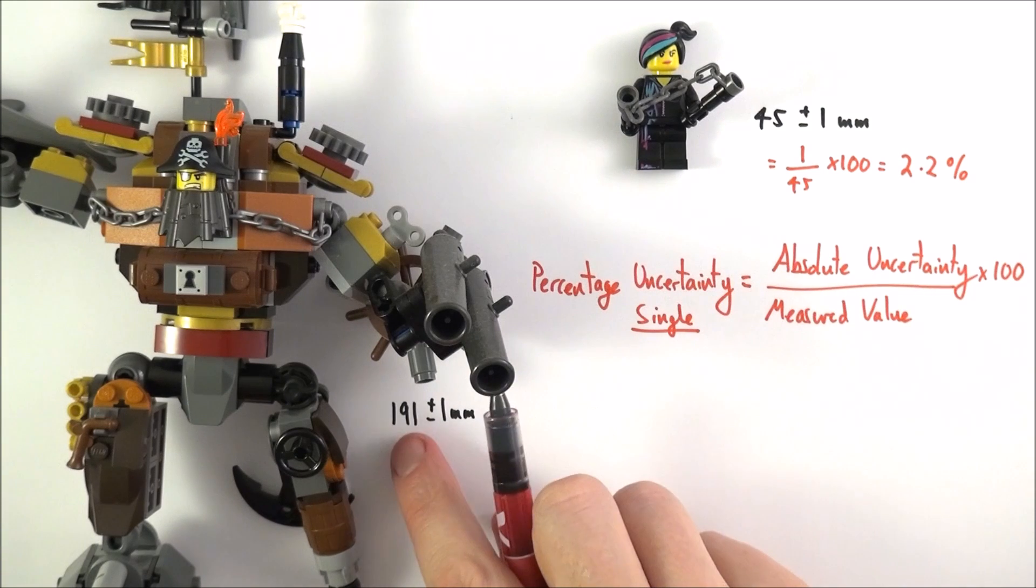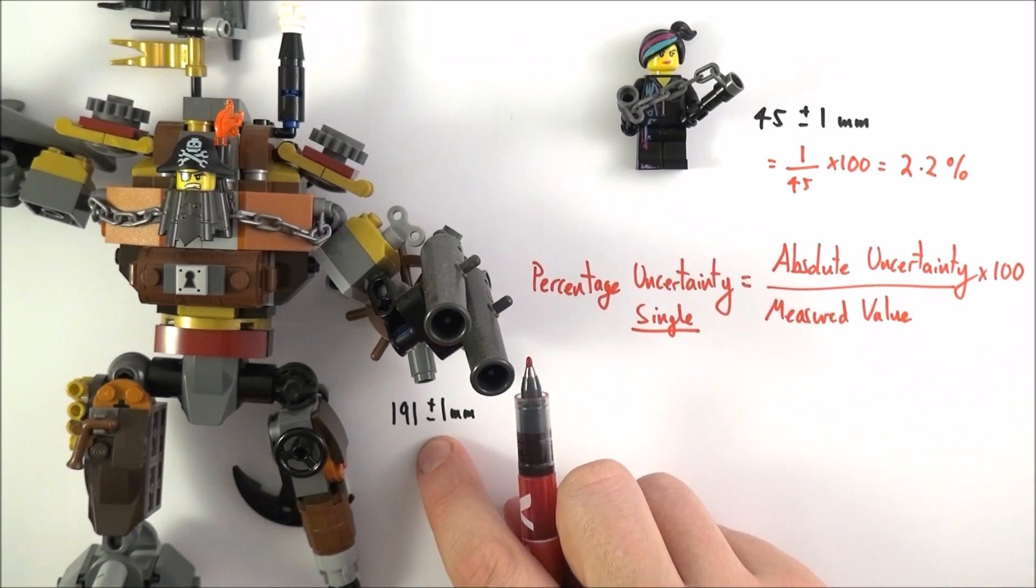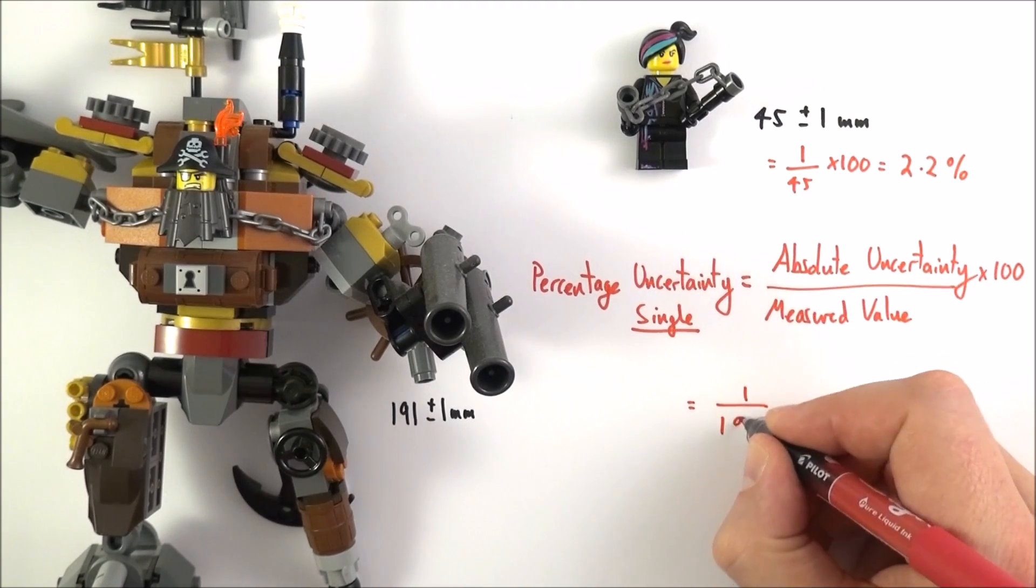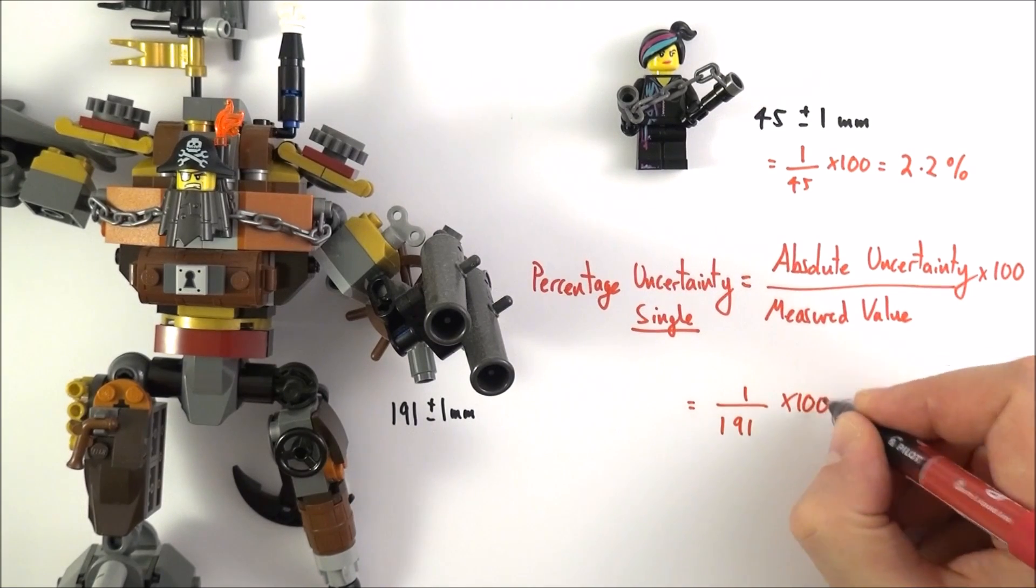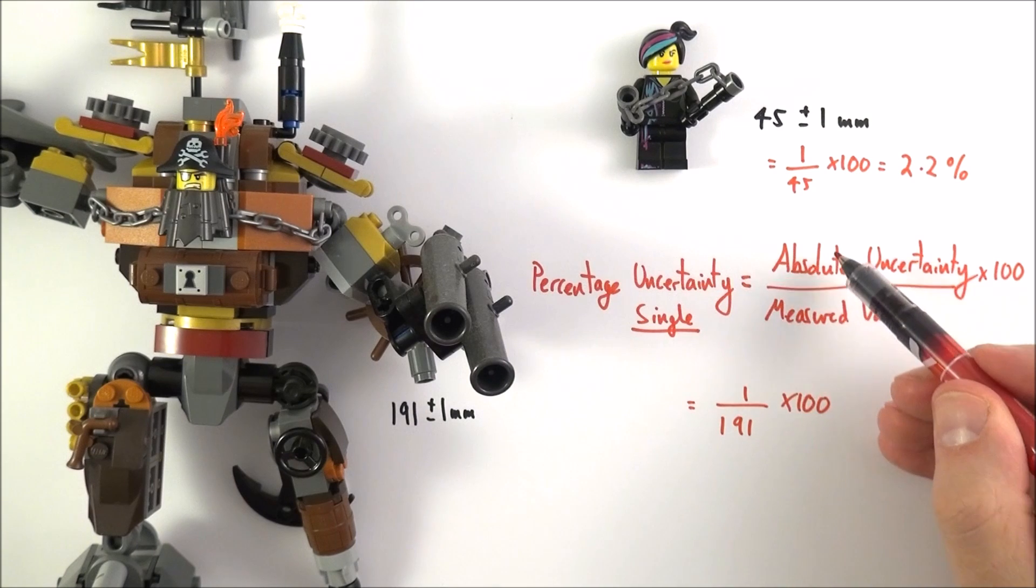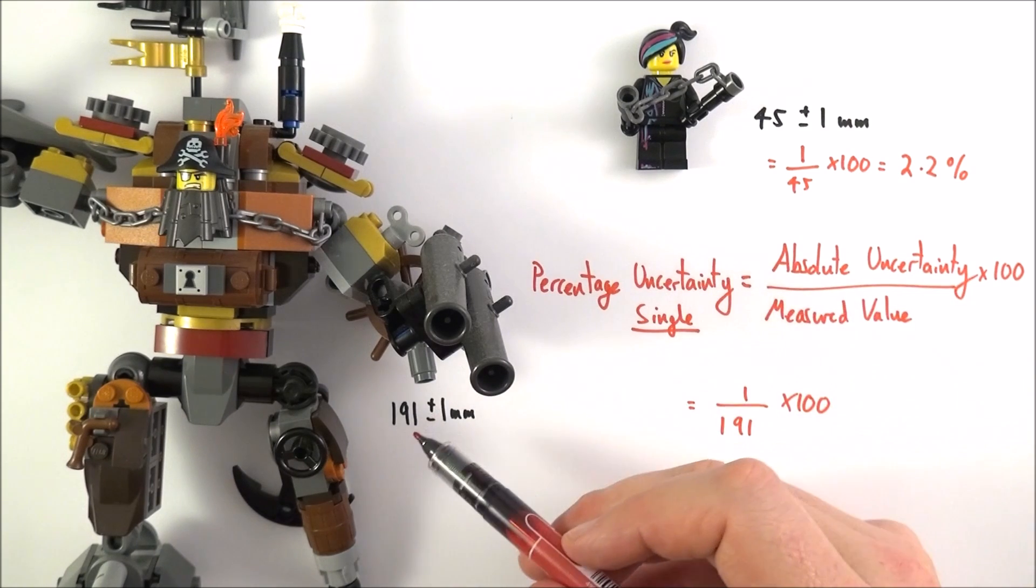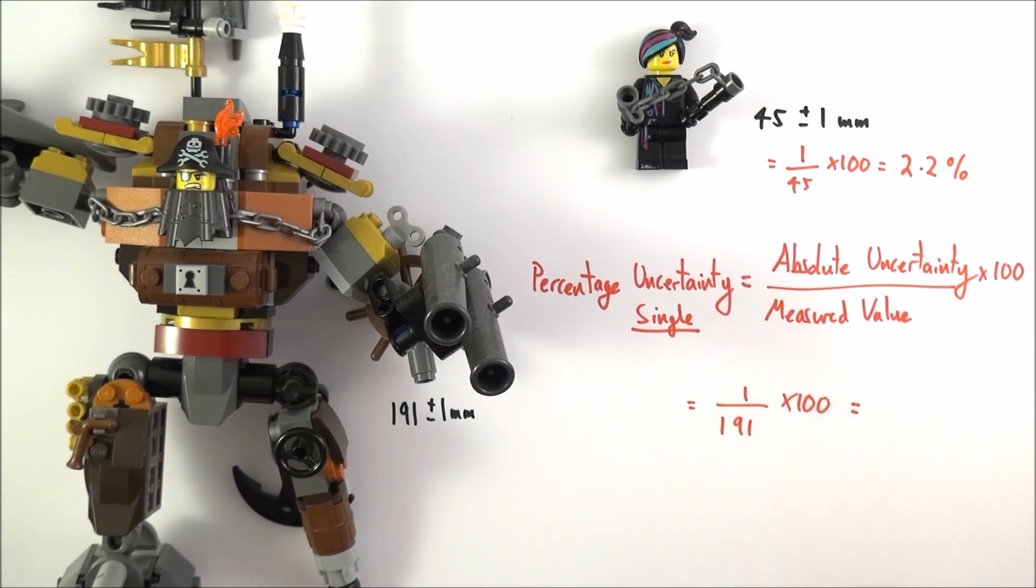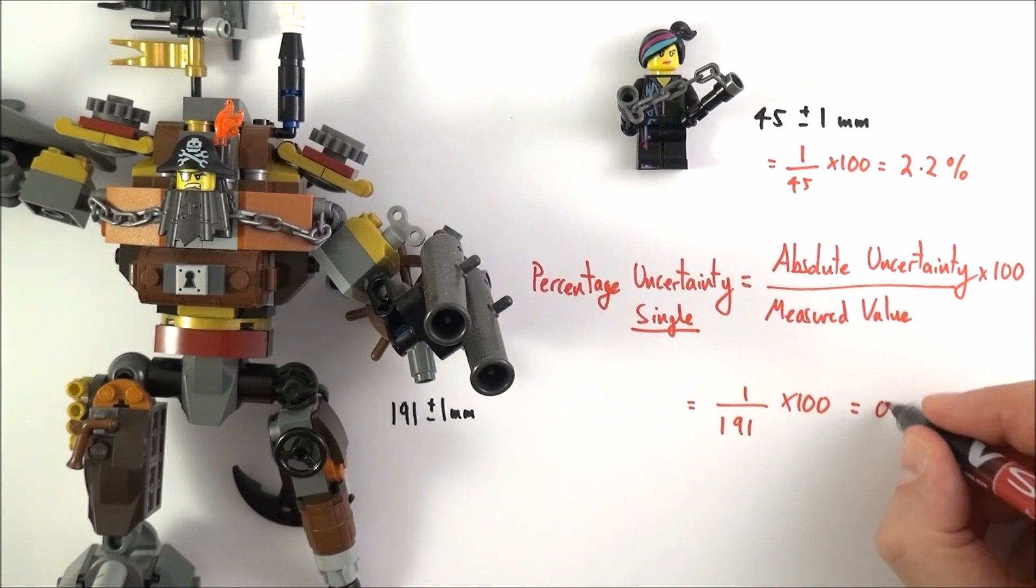When we come to something which is a lot larger but has the same absolute uncertainty, it's going to be equal to 1 over 191 multiplied by 100. So here is my absolute uncertainty and the measured value is 191. And if we put that into my calculator I find that that's equal to 0.52 percent.